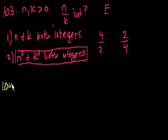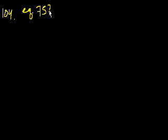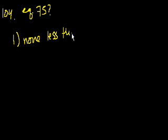Problem 104: If the arithmetic mean of six numbers is 75, how many of the numbers are equal to 75? Statement 1 says none of the six numbers is less than 75.